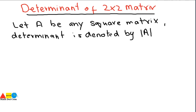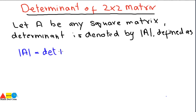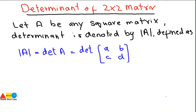The determinant will be denoted by |A|. This is the representation of the determinant — how you can represent the determinant of a matrix. It is defined as a mathematical expression. We write det(A), that is, the determinant of A. Let A be any square matrix as we have already assumed, with general elements a, b, c, d.